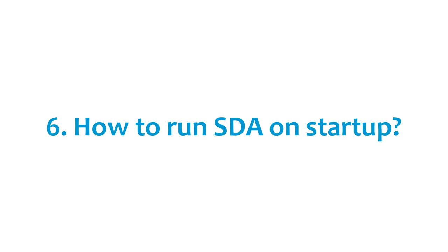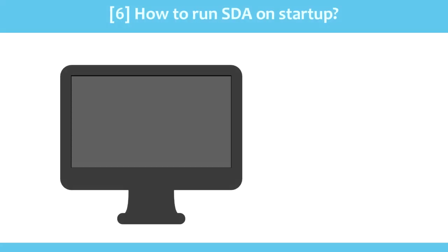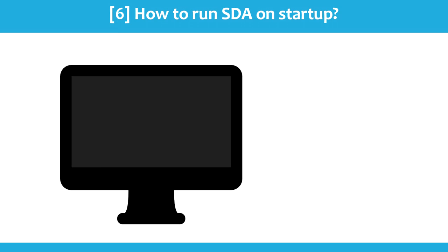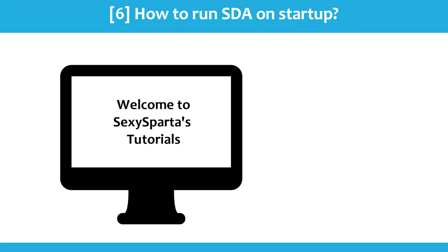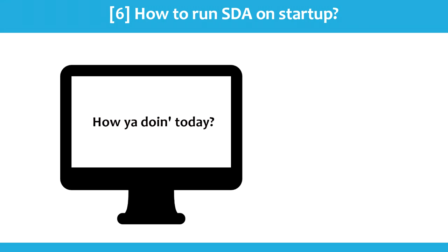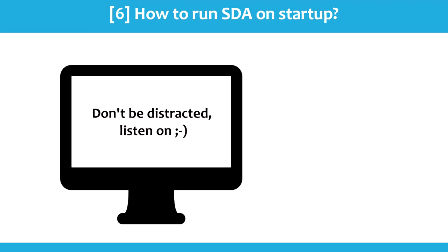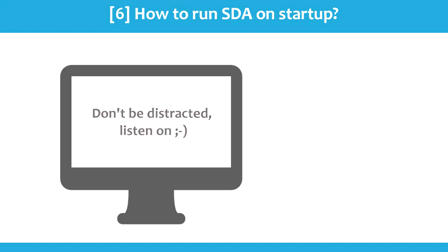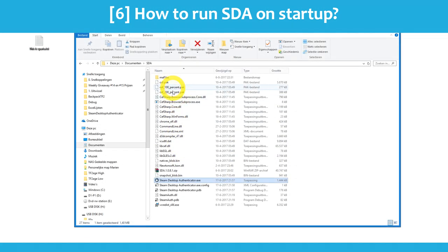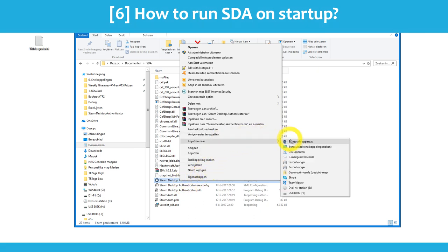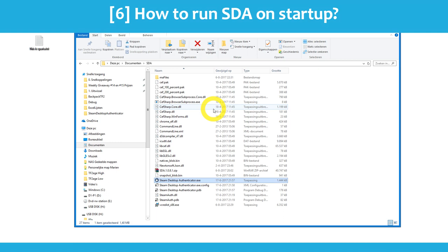Now, how do you run your SDA on startup? Most people want the SDA running automatically so every time you restart your PC you don't have to open it manually. It's pretty easy. First, open your SDA folder. Now create a shortcut of the SDA — right-click on SteamDesktopAuthenticator.exe, go to 'Send to' and click 'Desktop (create shortcut).' Next, you need to find your startup folder.